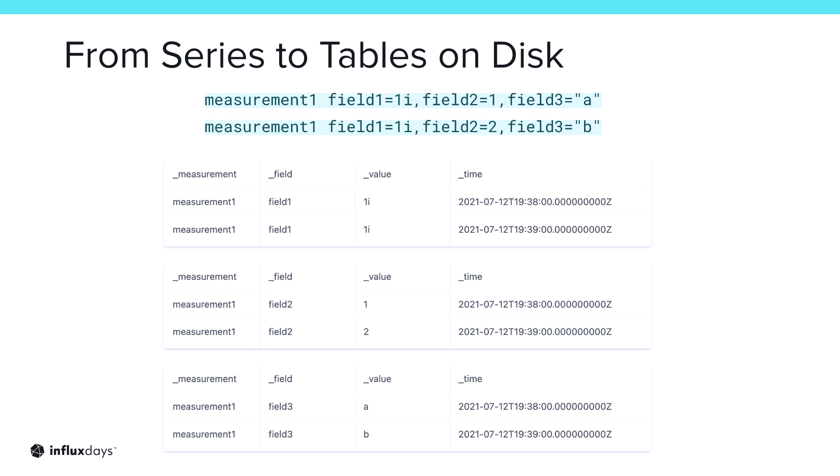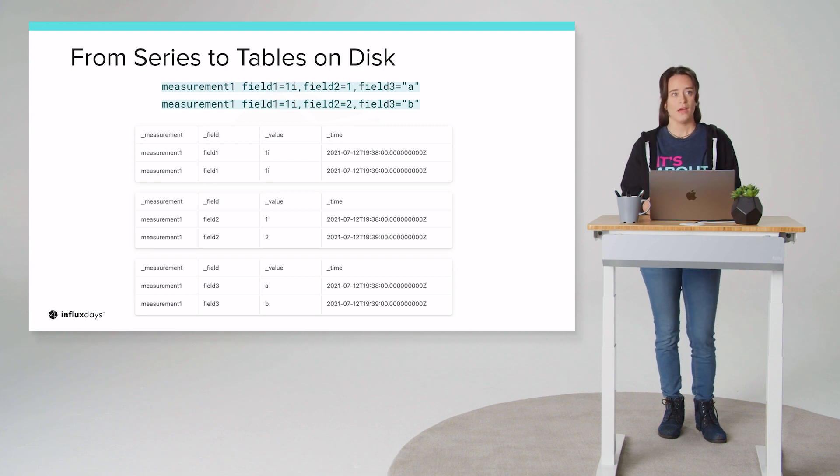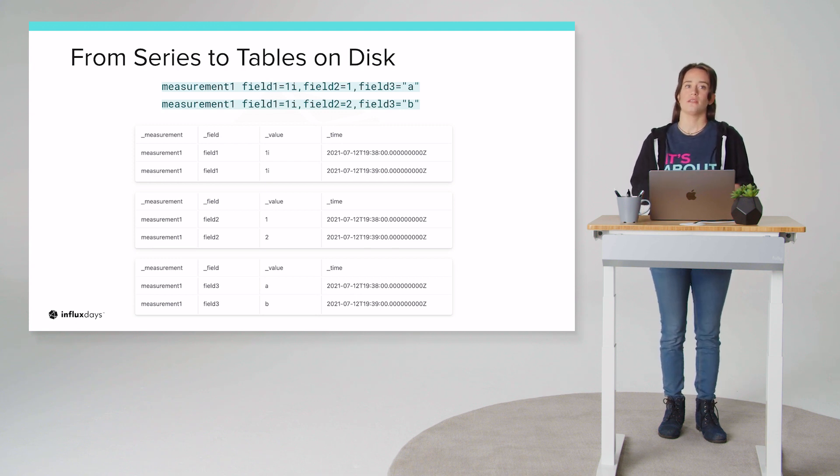So one of the first things that users are faced with when they write data to InfluxDB is that they use Flux to query data out, and they see this result stream. And in this result stream, there is a series of tables or a stream of tables. And one of the first questions that beginner Flux users ask is, what is this stream of tables? Why am I having three tables for this one query and four tables for this other query? How do I build an intuitive feel of the results that I'm going to get back from Flux and this table structure?